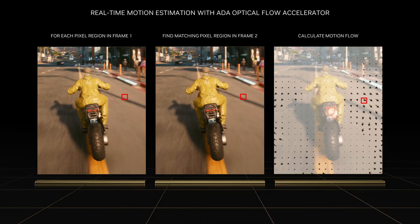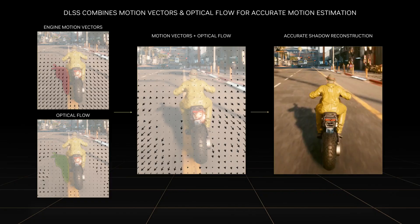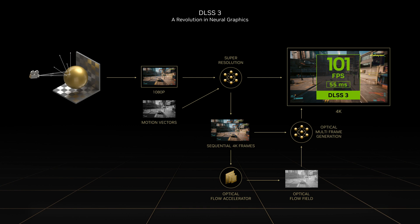The Optical Flow Accelerator analyzes two sequential frames and computes an Optical Flow field that describes how pixels in the first frame are moving in order to create images in the second frame. We need the Optical Flow field because we're trying to move objects between frames. We use Optical Flow in conjunction with geometric motion vectors from the game — each of them has complementary strengths. The decision about when to use each for different parts of the scene is quite complicated, so we train the DLSS Frame Generation AI to make use of both Optical Flow and motion vectors to generate the highest quality intermediate frames.